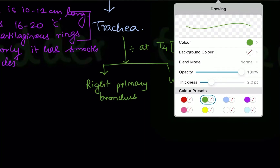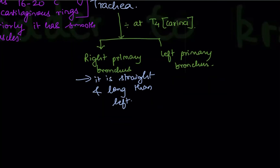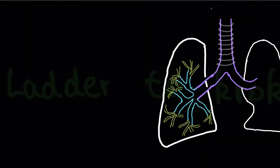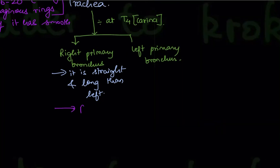The right primary bronchus is straight and longer than the left. This is important because if someone inhales a foreign object, it will get trapped in the right primary bronchus rather than the left one. The right primary bronchus opens into the right lung and the left primary bronchus opens into the left lung.